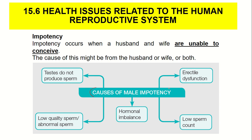The causes of male impotency include: the testes cannot produce sperm, low quality sperm, or abnormal sperm. It may also be caused by hormonal imbalance, erectile dysfunction, and low sperm count.